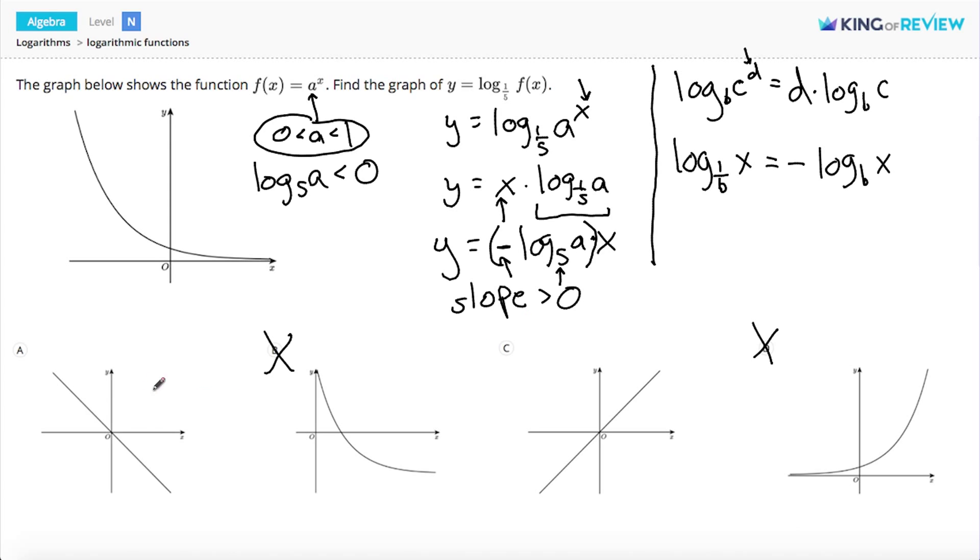The line in graph a has a negative slope, but the line in graph c has a positive slope. So, graph c shows the graph of y equals log base 1 fifth of a to the x. And that's it. Thanks for watching.